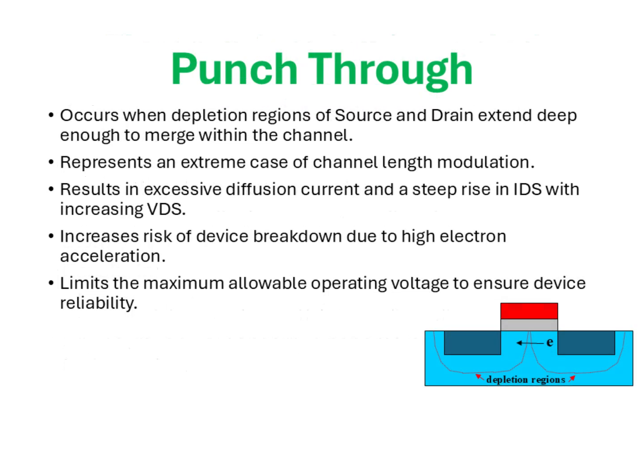Continuing from our discussion of short channel effects such as threshold voltage roll-off and drain-induced barrier lowering, let us now move to one of the most severe phenomena: punch-through. This effect becomes prominent as the channel length is aggressively scaled down. Normally, the source and drain junctions are separated by a sufficiently long channel and the depletion regions around them do not overlap. However, as device dimensions shrink, the depletion regions from both source and drain can extend so deeply into the channel that they actually meet. This merging of depletion regions effectively bypasses the gate's control over the channel, and instead, a significant diffusion current flows directly between source and drain once a certain drain voltage is applied.